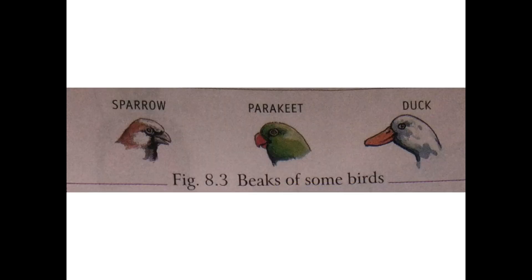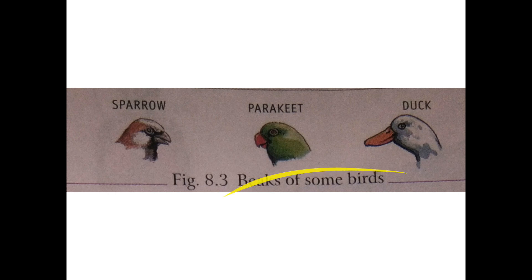In the case of birds, depending upon the food type they eat, their beaks differ. Sparrows have a small beak, parakeets have a curved beak, ducks have a flat and broad beak, and flesh-eating birds like eagles, kites, and vultures have a sharp strong hooked beak to tear flesh. They also use their claws to catch prey and tear flesh.